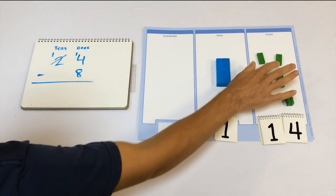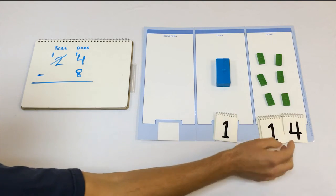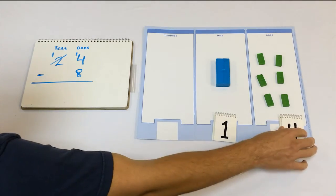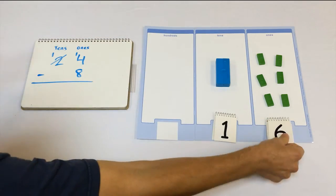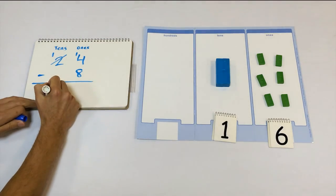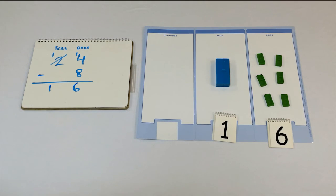10, 11, 12, 13, 14, 15, 16. That's 1 ten and 6 ones. 1 ten, 6 ones.